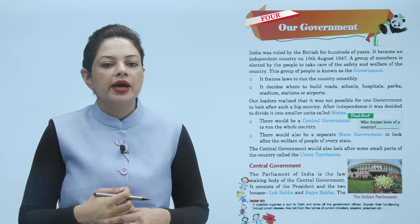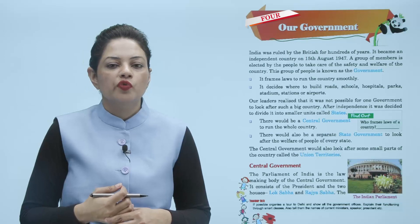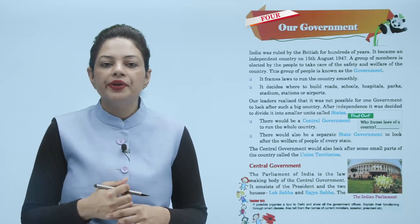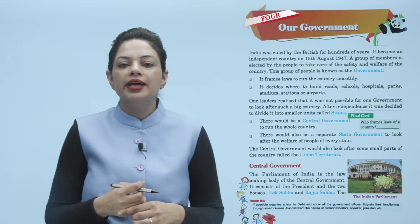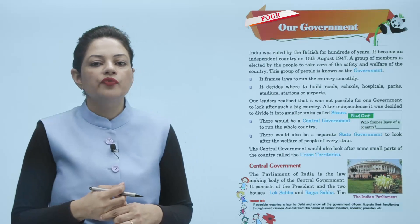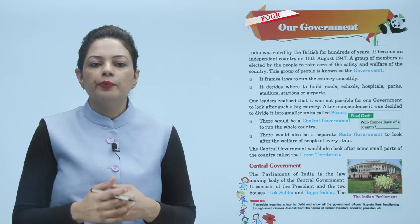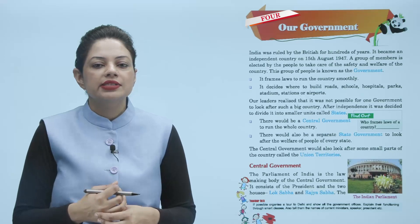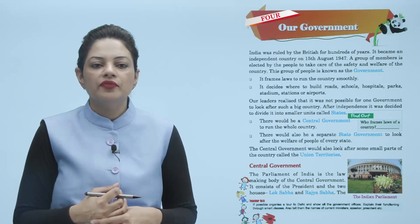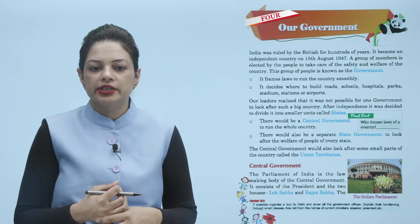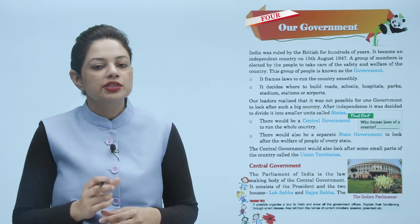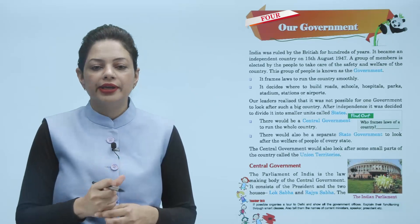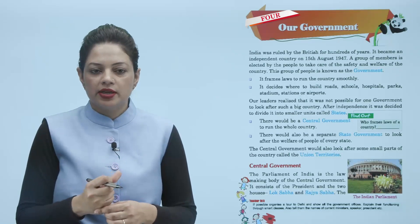India was ruled by the British for hundreds of years. It became an independent country on 15th August 1947. A group of members is elected by the people to take care of the safety and welfare of the country. This group of people is known as the government.